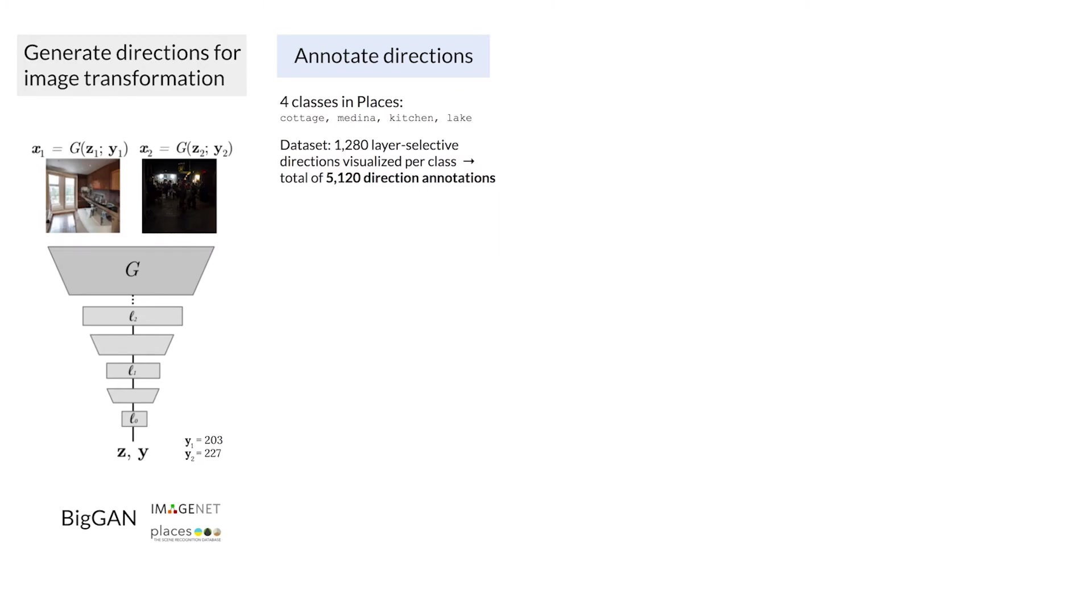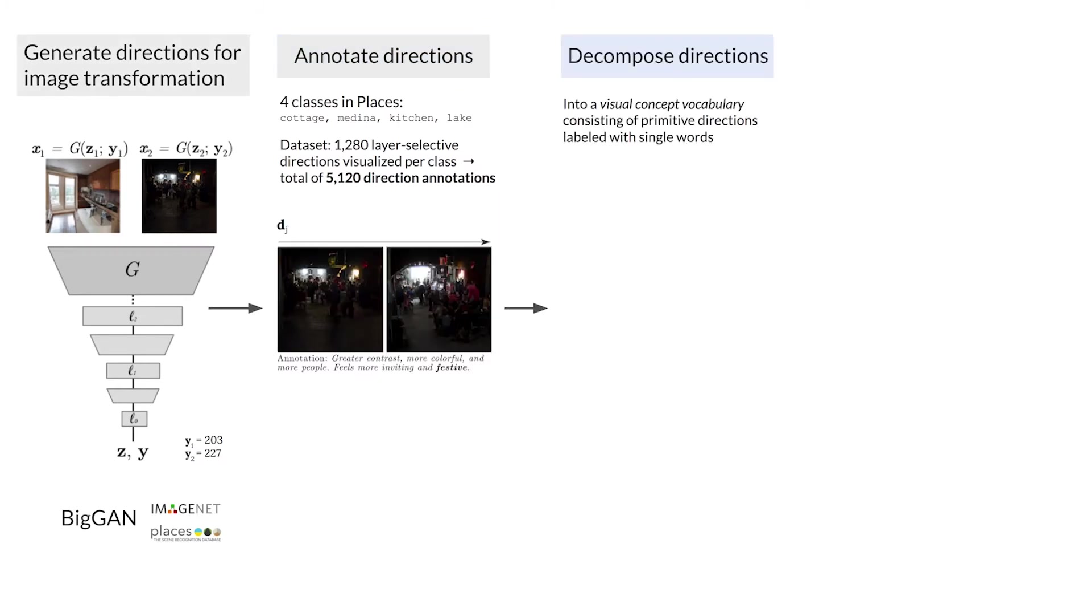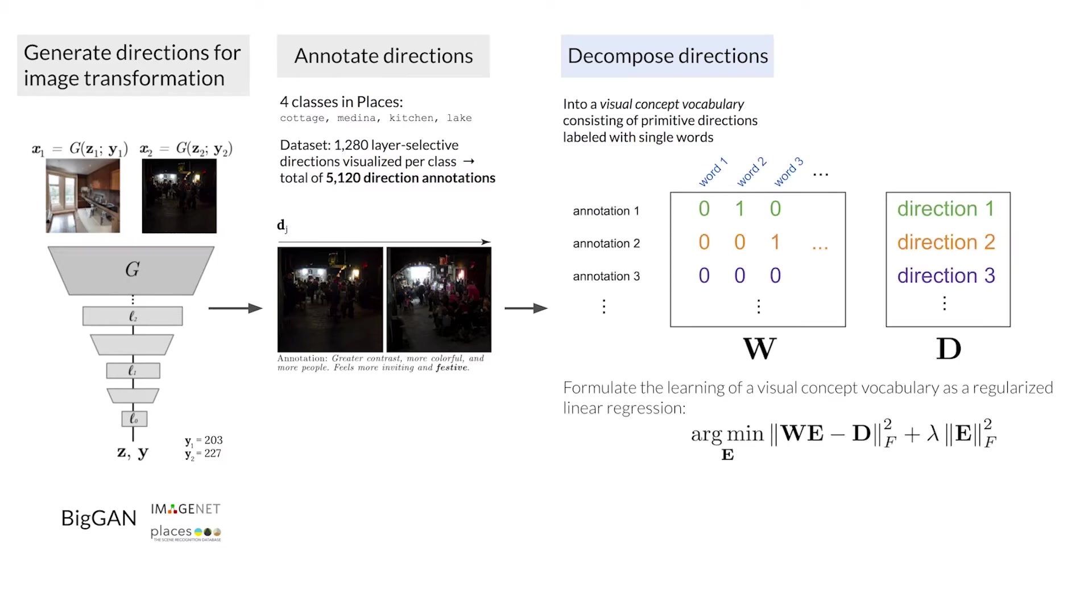Next, we need to disentangle these concepts to construct our vocabulary. We can formulate learning the vocabulary as a regularized linear regression. Let W be a word matrix, whose entries specify if word J is present in annotation I, and let E be the matrix of word embeddings we're solving for. We compare WE to D, where rows of D are the annotated ground truth directions. We solve analytically for E, and then can read off embeddings of individual concepts in latent space.